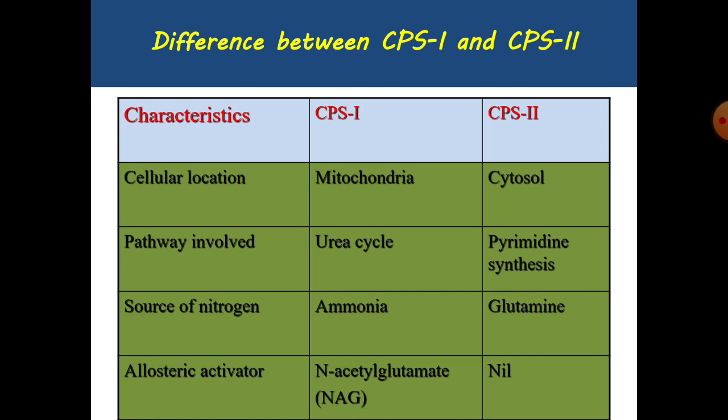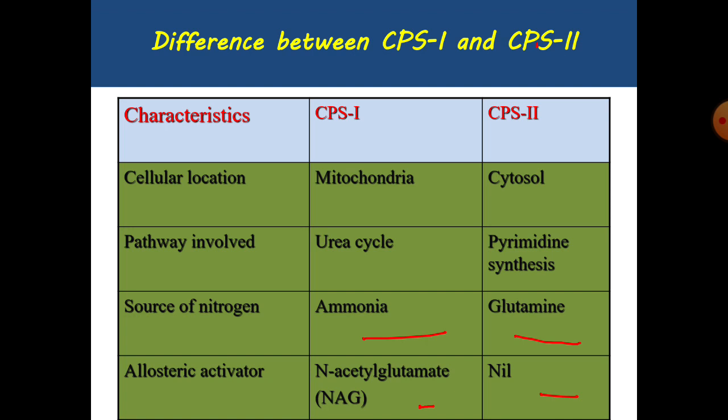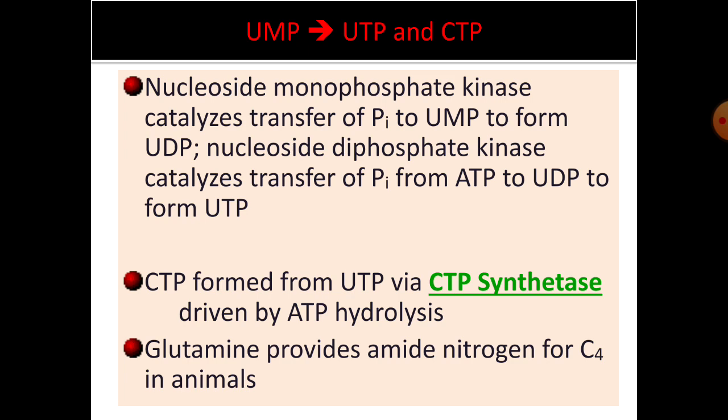CPS1 versus CPS2 — this commonly appears as a short note. CPS1, found in the urea cycle, is located in the mitochondria, whereas CPS2, involved in pyrimidine synthesis, is in the cytosol. The nitrogen source for CPS1 is ammonia, while for CPS2 it is glutamine. CPS1 requires NAG (N-acetyl glutamate) as an allosteric activator, whereas CPS2 requires no such activator.